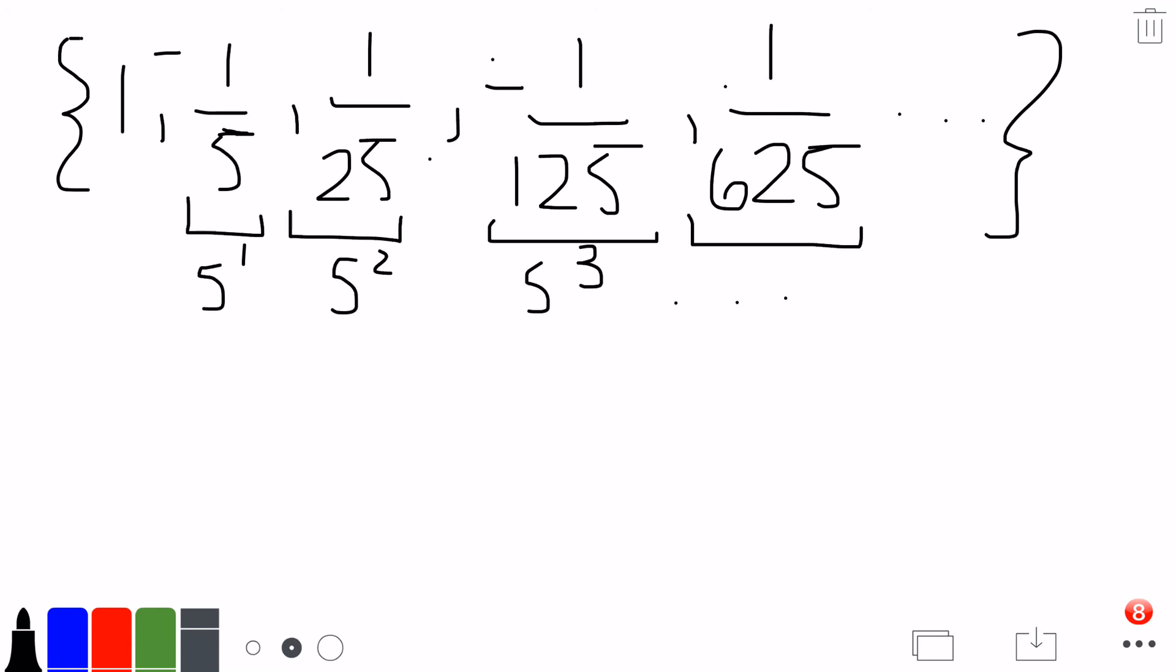So ignoring the positive and negative for a second, if we could write the sequence as 1 over 5 to the n, although this wouldn't work because our first term is 1. What if we wrote 1 fifth to the n minus 1?